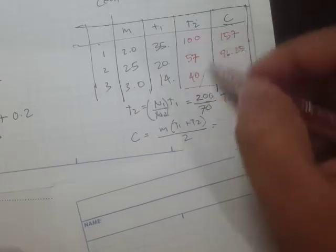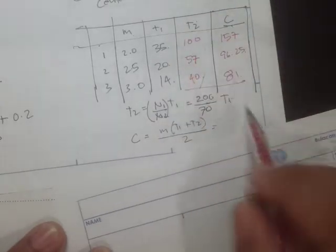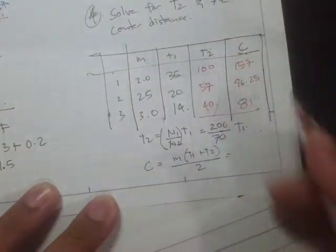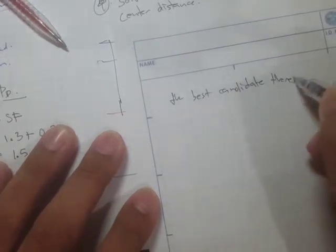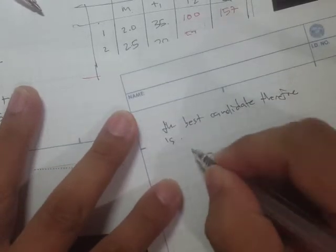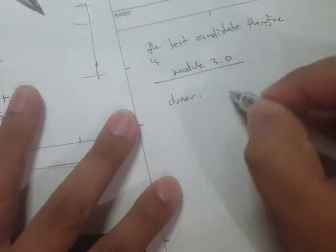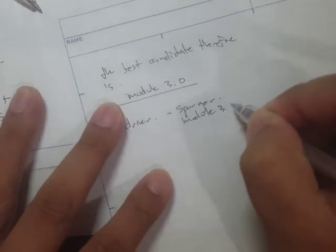For the number of teeth, you have to check if it's a standard size. In this problem it says we need a center distance of approximately 80 millimeters, so in these choices the best candidate is module 3.0. Therefore, for the driver we have a spur gear that's module 3.0.